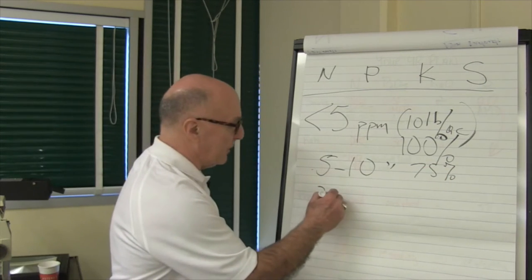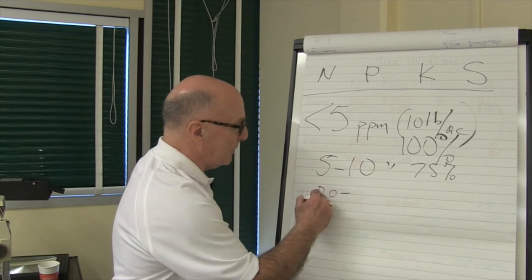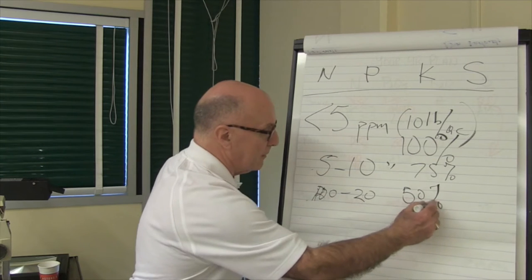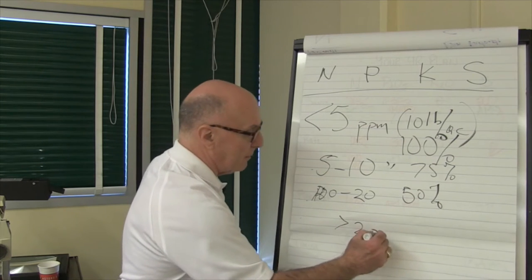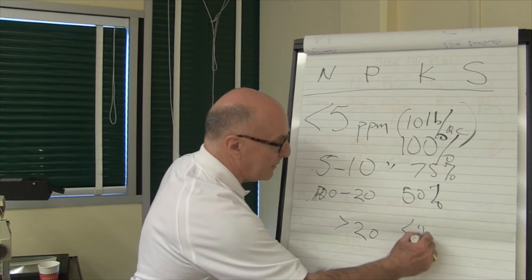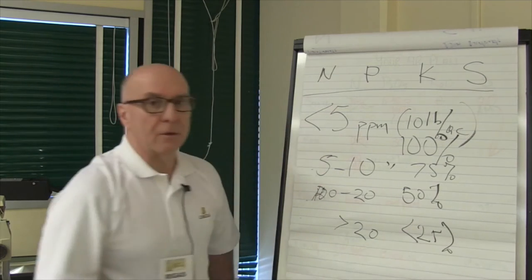If it is between 10 and 20, you've got a 50% probability, and if it's over 20, you've got less than 25% probability of getting a response.